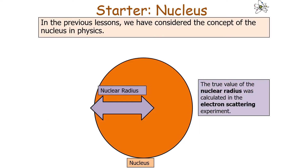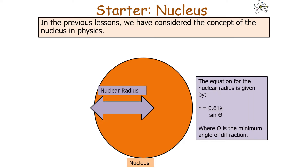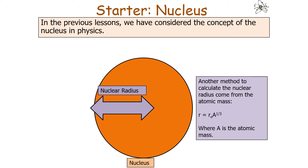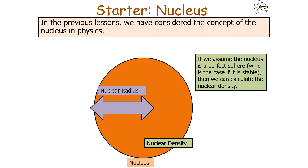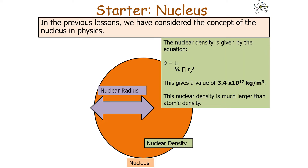The true value of the nuclear radius was calculated in the electron scattering experiment, where the de Broglie wavelength of an electron is equivalent to the gap size between nuclei, causing electrons fired at nuclei to diffract through the substance. The equation for the nuclear radius in this instance was 0.61 lambda over sin theta, where theta is the minimum angle of diffraction. Another method to calculate the nuclear radius came from atomic mass, where nuclear radius equals R0 times A to the power of a third, where A is atomic mass and R0 is the average radius of a nucleon. Assuming the nucleus is a perfect sphere, we can calculate its nuclear density, which is constant for all nuclei at about 3.4 times 10 to the 17 kilograms per metre cubed.